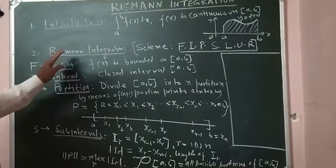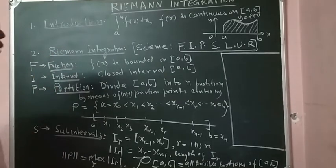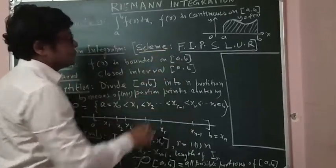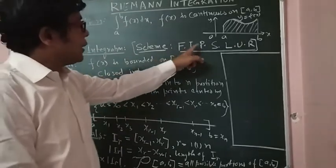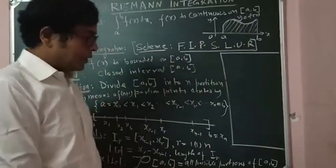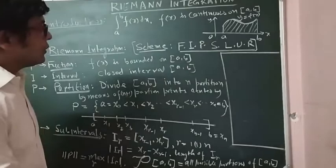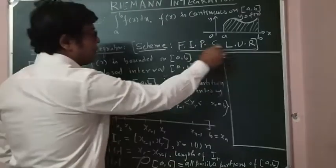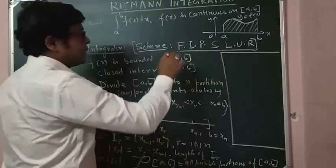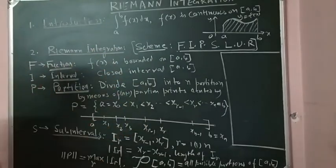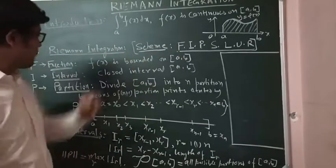All the terms I have given in a scheme. I call it F-I-P-S-L-U-R. If you remember this sequence, I think you can understand and define the Riemann integration. What is F?